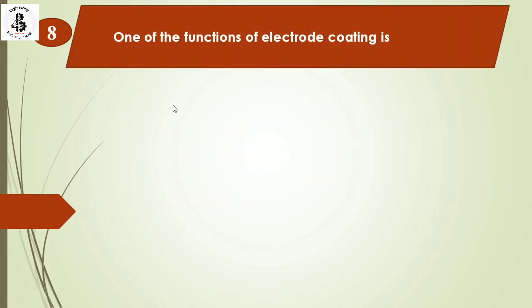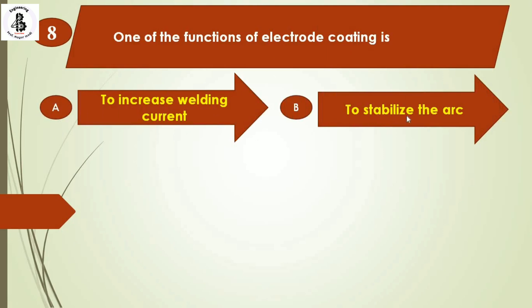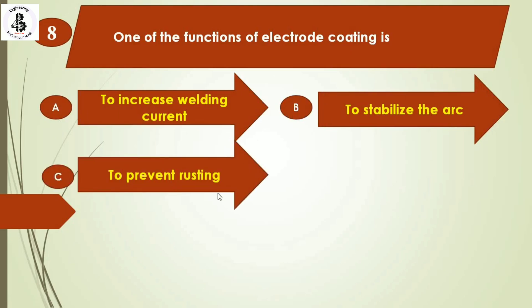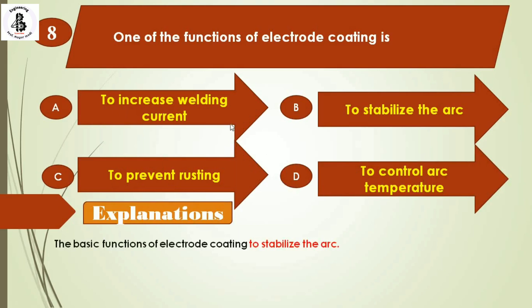The next question: one of the functions of electrode coating is — Option A: to increase welding current, Option B: to stabilize the arc, Option C: to prevent rusting, Option D: to control arc temperature. One of the functions of electrode coating is to stabilize the arc, which is essential for getting maximum heat into the weld zone. The right answer is Option B.